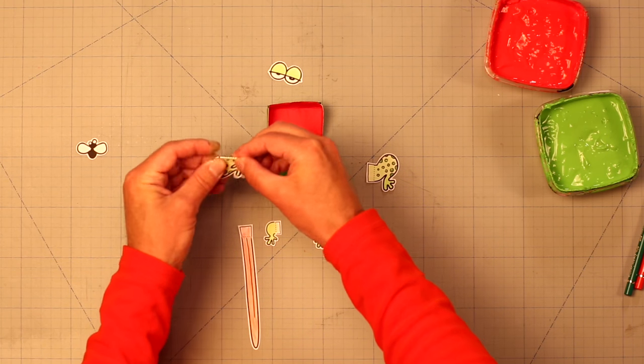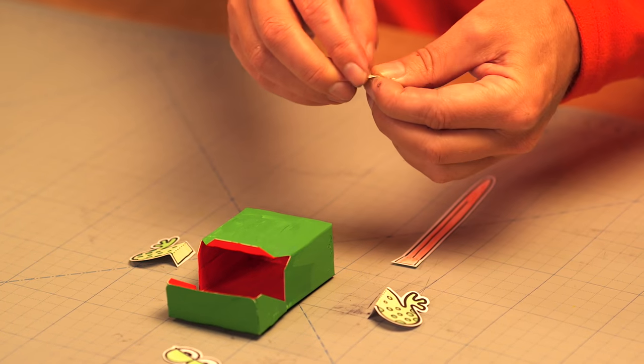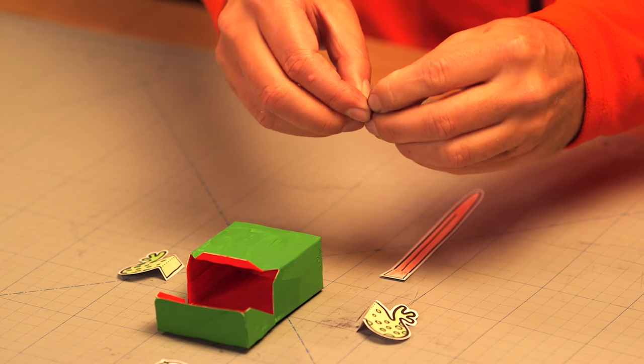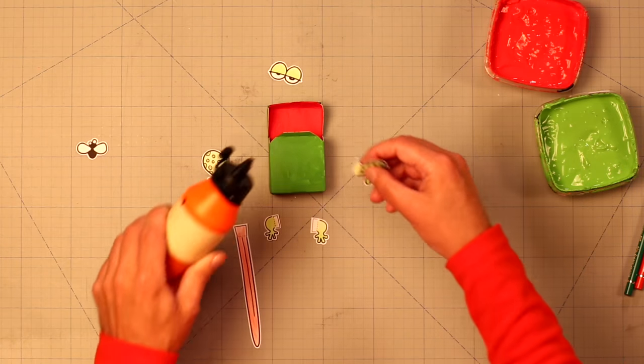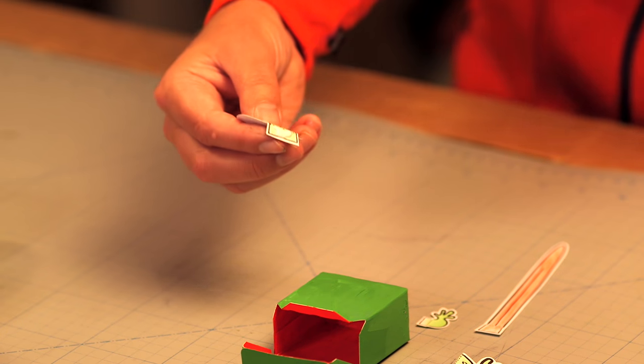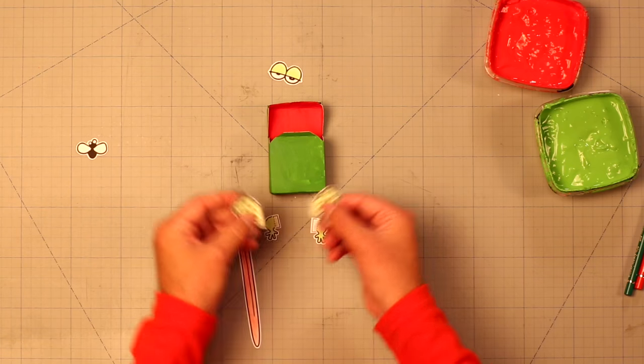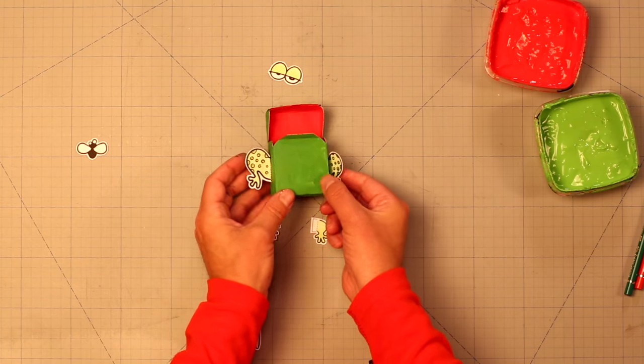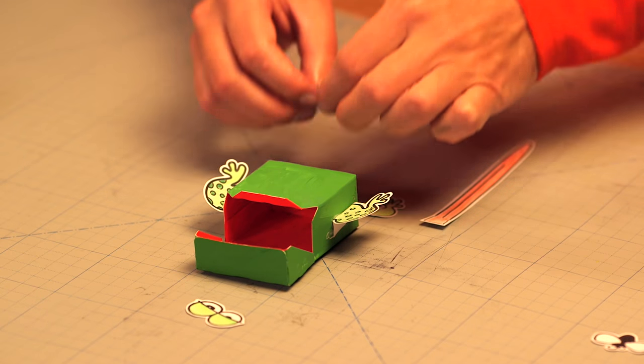The bits also need a little lug to put the glue on. And then we can glue them on. Each bit we glue will make the box look more like a frog.